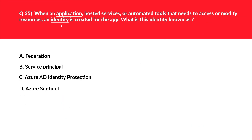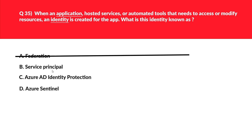This question is related to identity. Option A is Federation — Federation is related to trust, and since the question makes no mention of trust, we can reject option A. Option B is service principal — this can be the potential answer, as applications registered through the Azure portal are automatically associated with a service principal and application object, so we'll keep this option aside. Option C is Azure AD Identity Protection, which keeps you informed about suspicious user and sign-in behaviors.